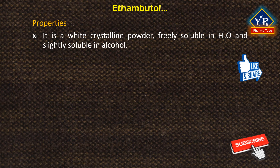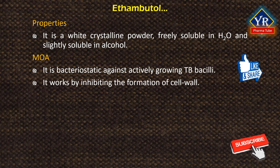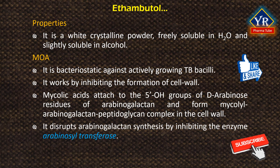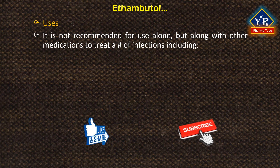Ethambutol is a white crystalline powder, freely soluble in water and slightly soluble in alcohol. Mechanism of action: ethambutol is bacteriostatic against actively growing tubercle bacilli and works by obstructing the formation of the cell wall. Mycolic acids attach to the 5-hydroxyl groups of D-arabinose residues of arabinogalactan and form a mycolyl-arabinogalactan-peptidoglycan complex in the cell wall. It disrupts arabinogalactan synthesis by inhibiting the enzyme arabinosyl transferase, leading to increased permeability of the cell wall. Ethambutol is used along with other medications to treat tuberculosis, Mycobacterium avium complex, and Mycobacterium cansasi.